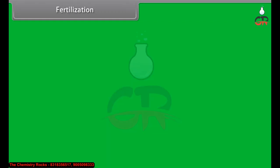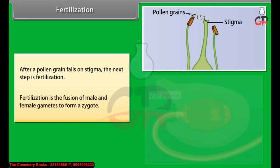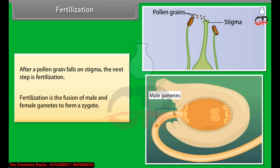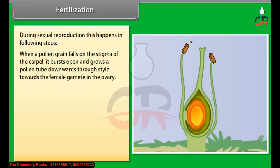After a pollen grain falls on the stigma, the next step is fertilization. Fertilization is the fusion of male and female gametes to form a zygote. During sexual reproduction, when a pollen grain falls on the stigma of the carpel, it bursts open and grows a pollen tube downwards through the style towards the female gamete in the ovary.